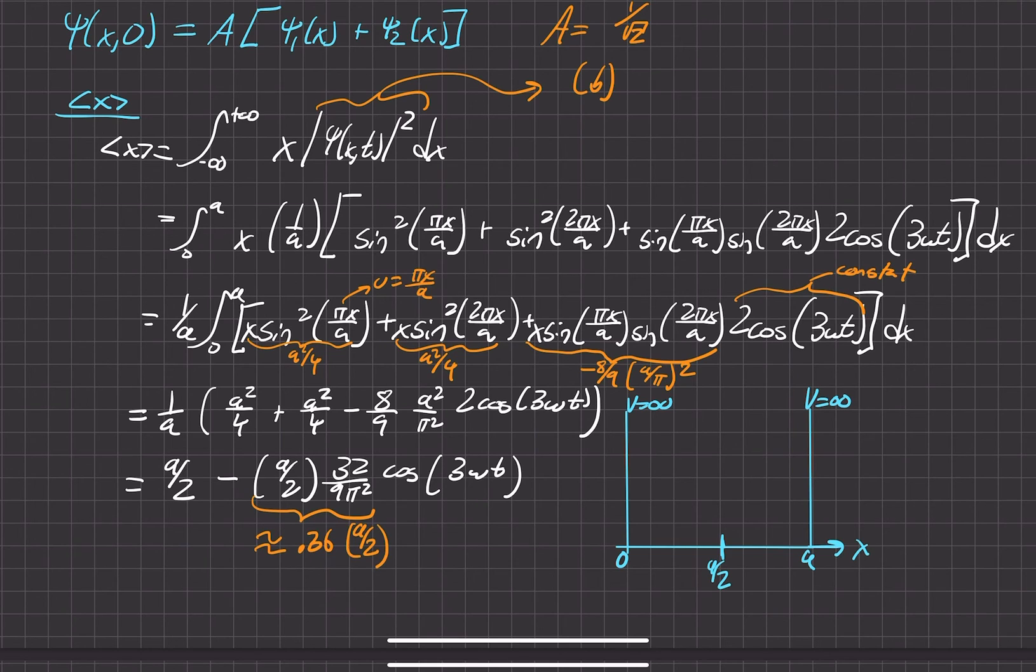And again, leaving it in terms of things that make sense to us. Right. If we can physically interpret. So it's about 0.36 in terms of oscillation. So I'm just like graphically put it right here. Right. So at most, this particle is oscillating from here to here as time goes on.